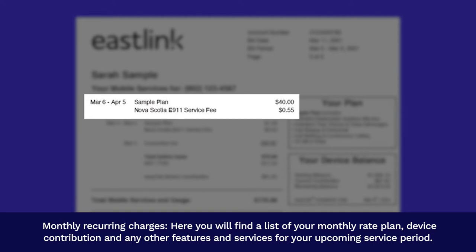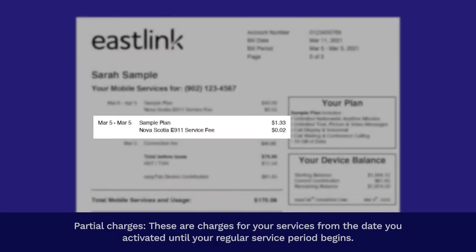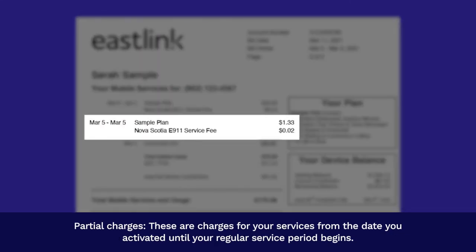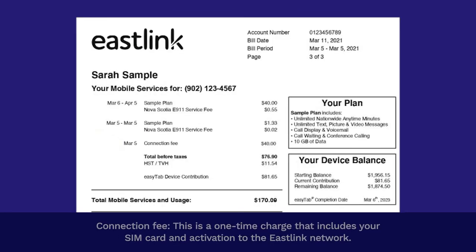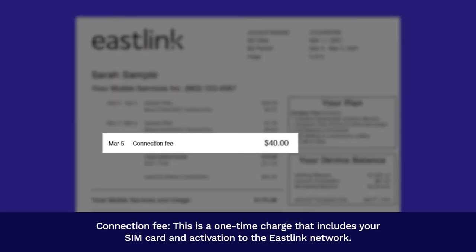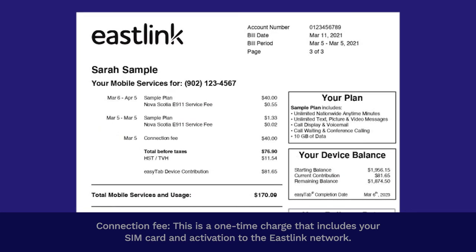Partial charges: these are charges for your services from the date you activated until your regular service period begins. Partial charges occur on new activations or when you have made a change to your account during your service period. Connection fee: this is a one-time charge that includes your SIM card and activation to the Eastlink network.